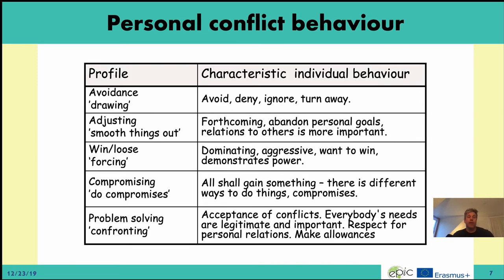We can have different behaviors when it comes to conflict. One profile is the avoidance profile — trying to avoid, deny, ignore, and turn away from the conflict. There is the appeasement profile, who is trying to smooth things out and is ready to abandon personal goals because prioritizing the relationship to others is more important.